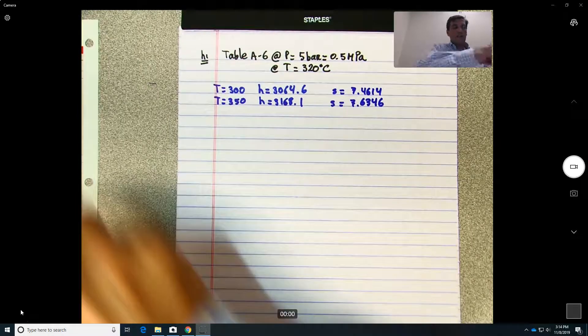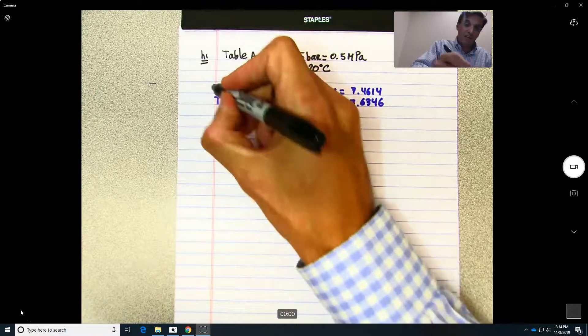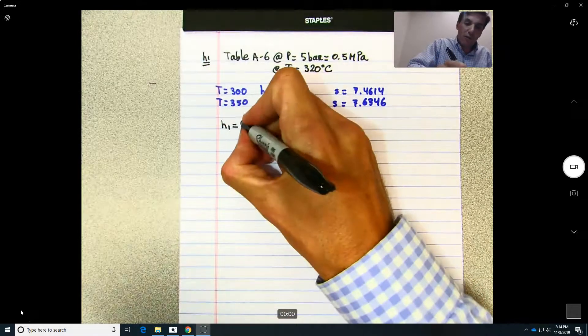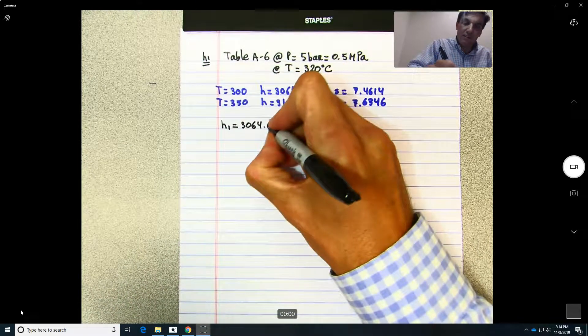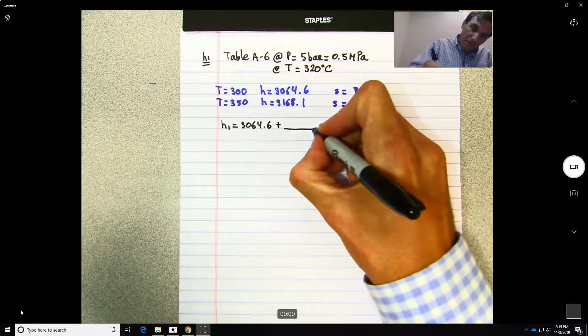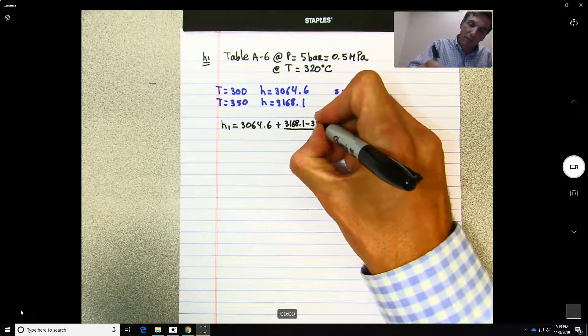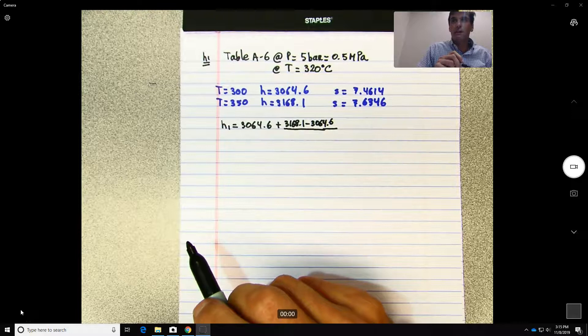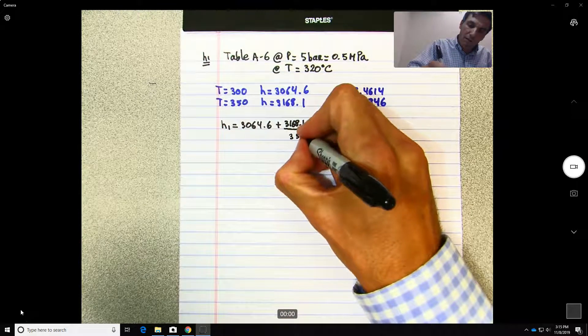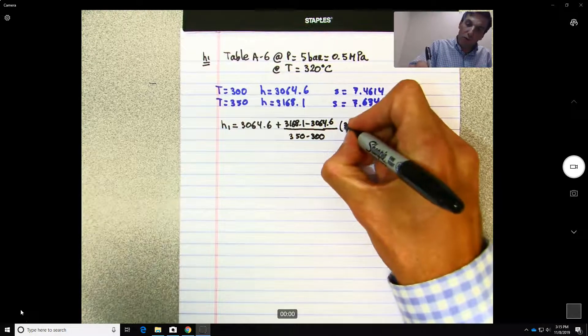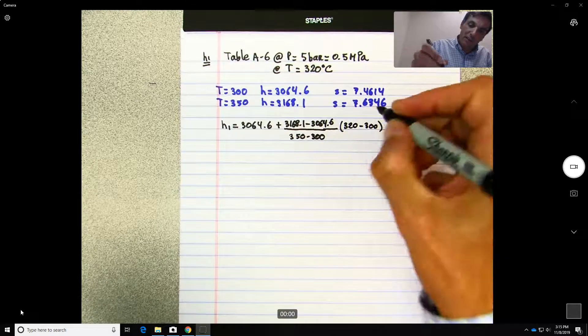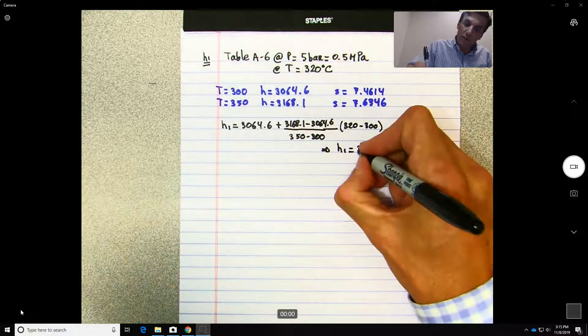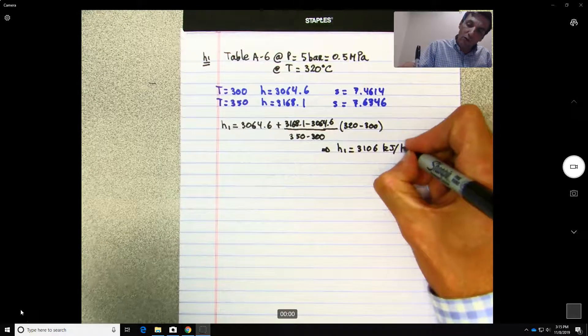So if we interpolate over here for h using temperatures and h, we're going to get that h1 will be equal to 3064.6 plus (3168.1 minus 3064.6) divided by (350 minus 300) times (320 minus 300). This is going to give us that the enthalpy at 1 is equal to 3106 kilojoules per kilogram.